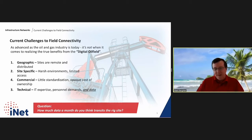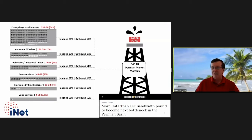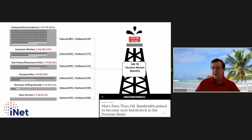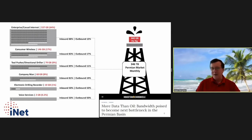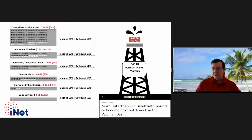A question for the audience: how much data per month do you think transits a rig site today? It turns out in the Permian, we are delivering almost a terabyte of data per rig per month — 842 gigabytes per rig on average. When the rig count was a little higher, there were about 346 terabytes of information moving in and off drilling operations across the Permian Basin. Some have said the oil and gas business is really about data today, and the Houston Chronicle noted bandwidth needs may become the next bottleneck in the Permian.